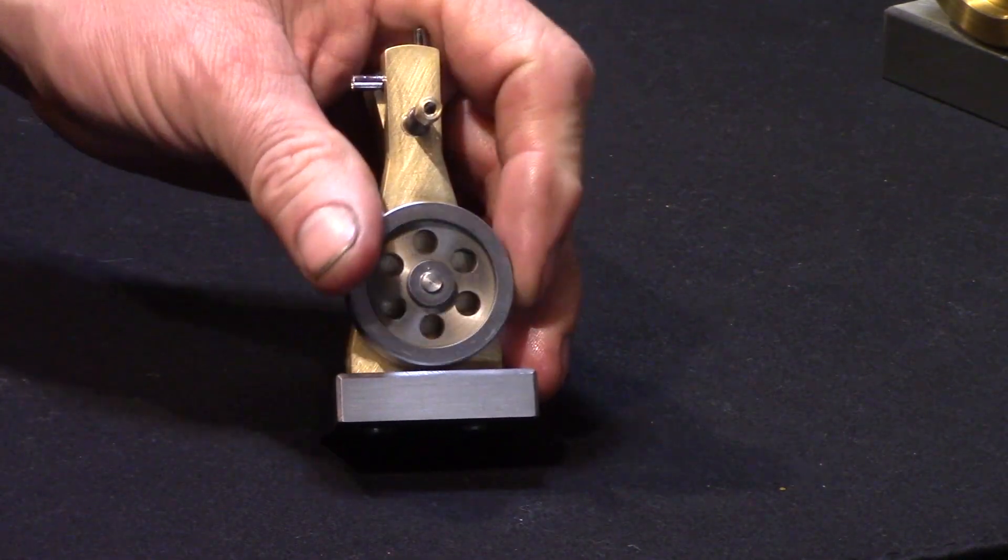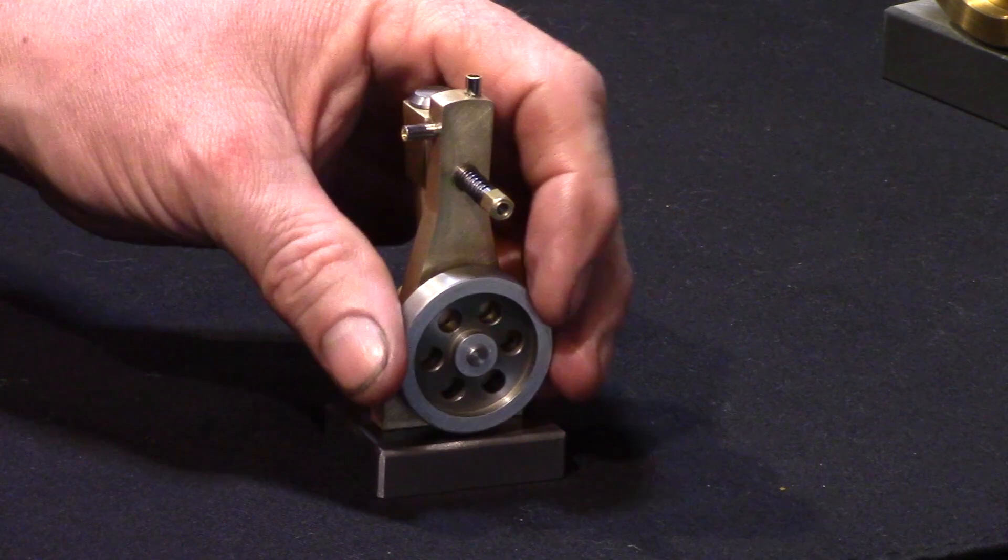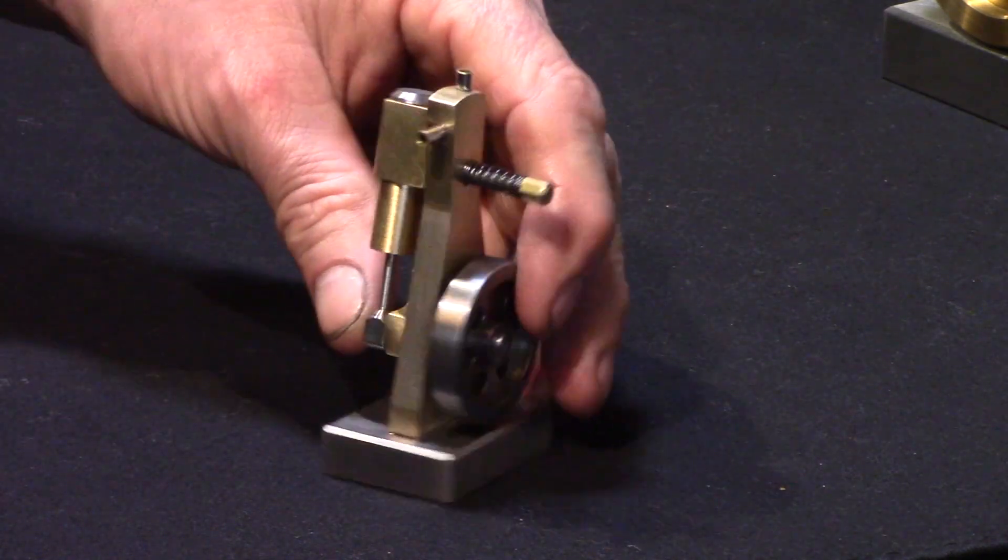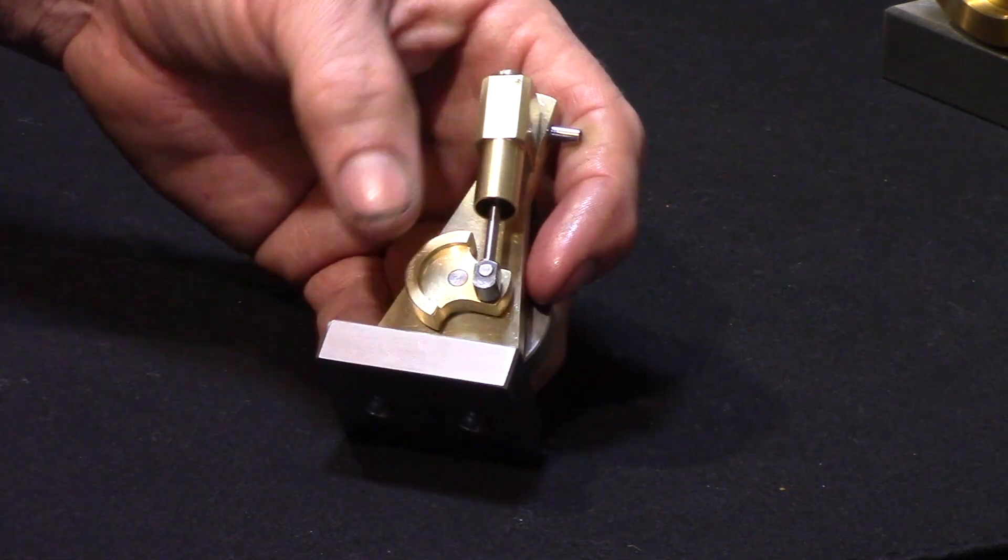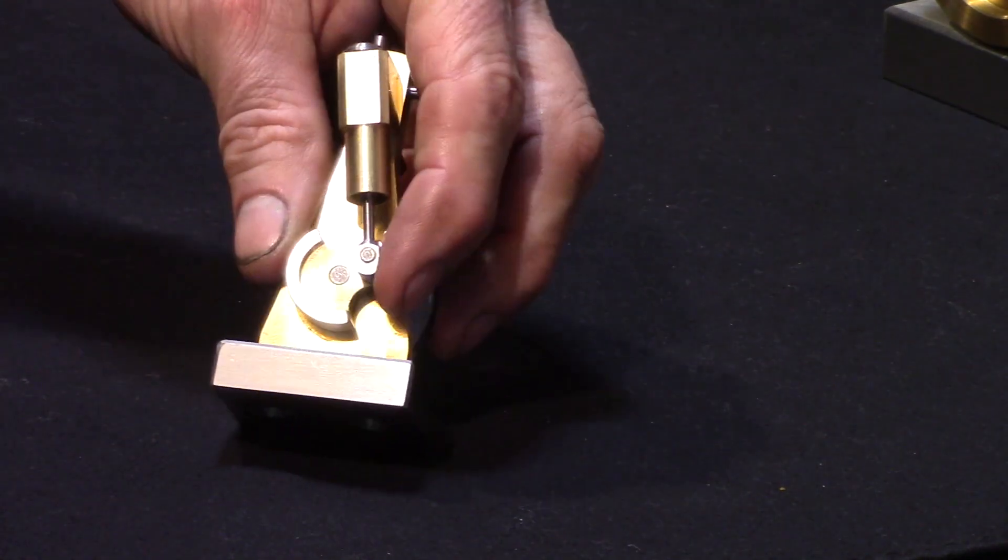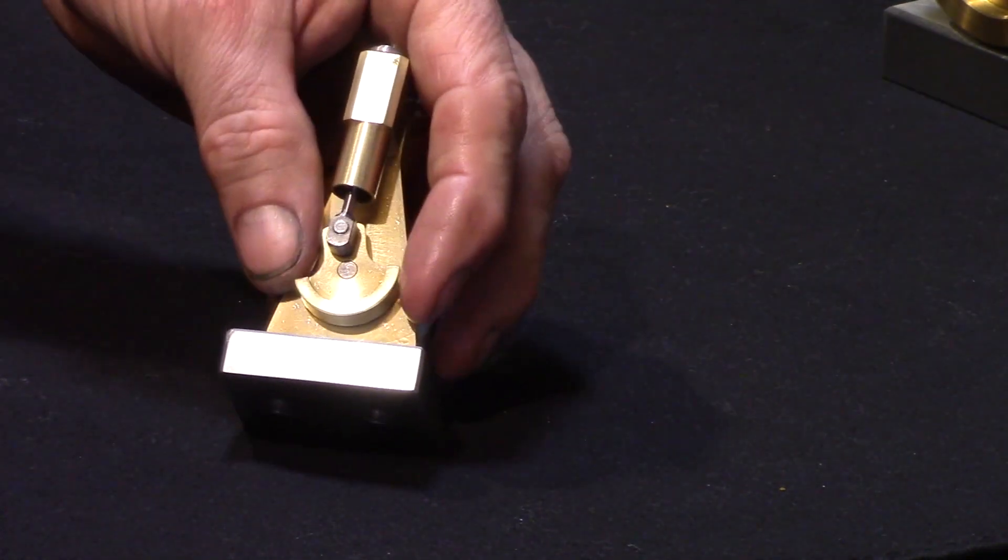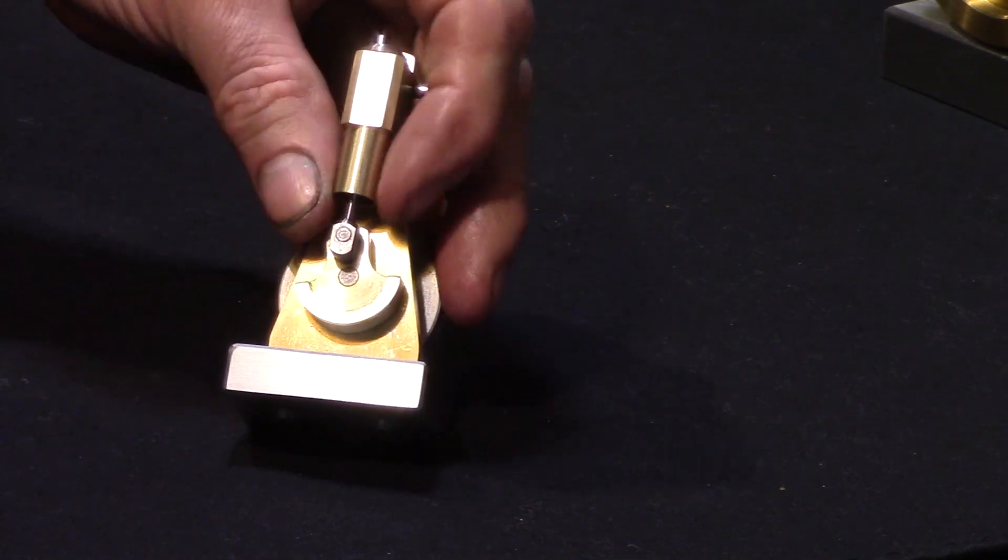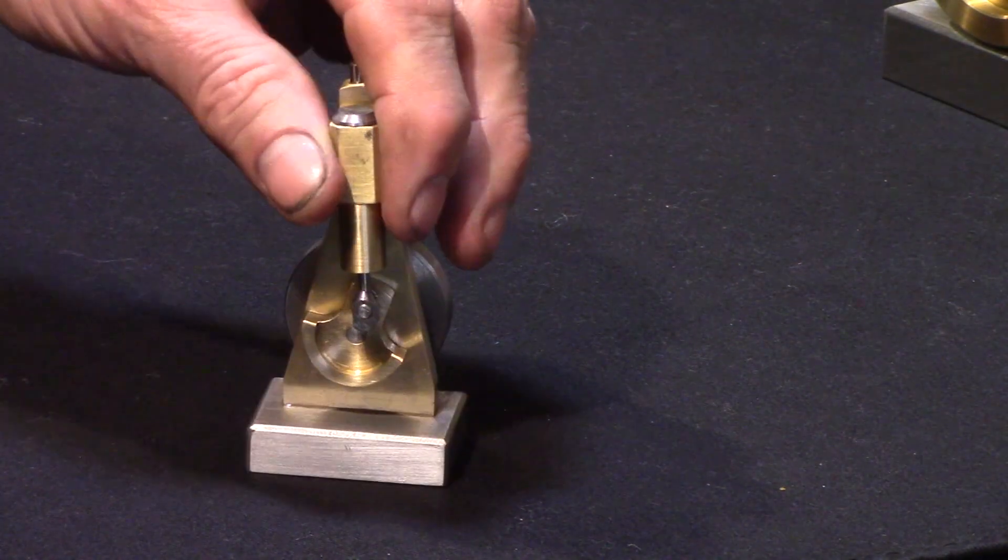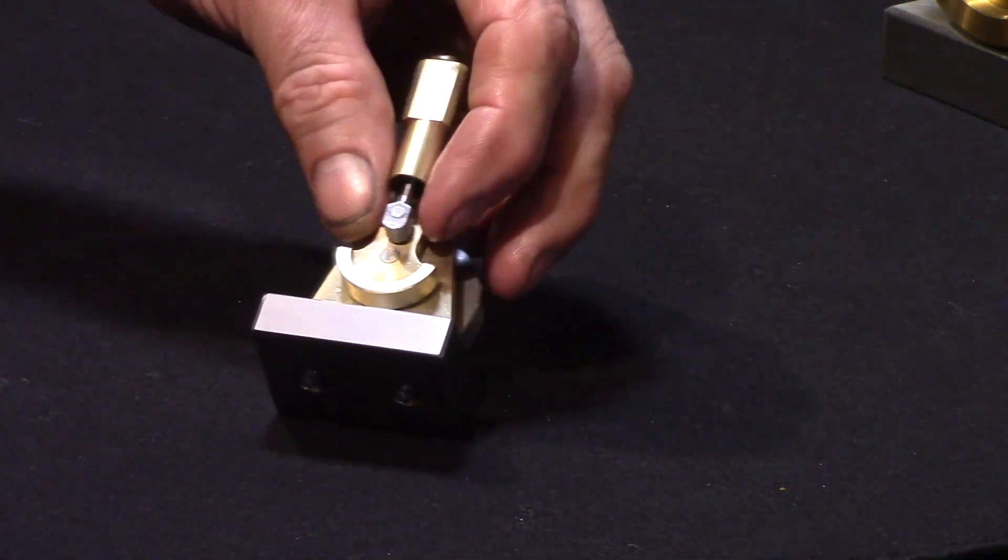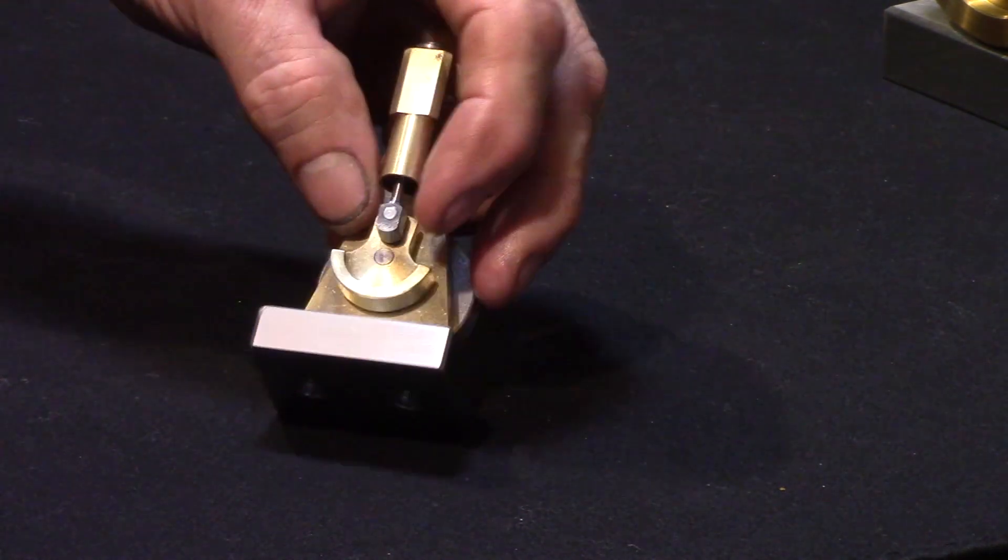Then the holes were drilled on the rotary table on the milling machine. The same with the crank disc - that was just turned on the lathe and then the shapes here were milled out. It's quite a beautiful little thing.